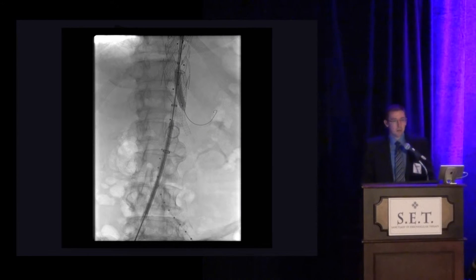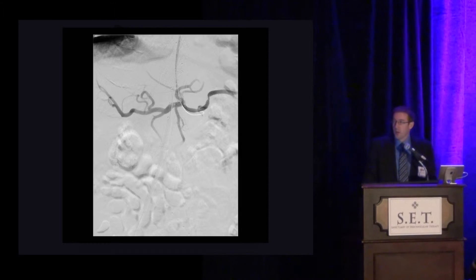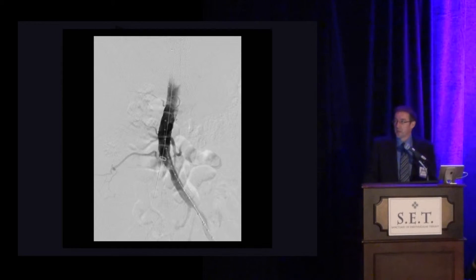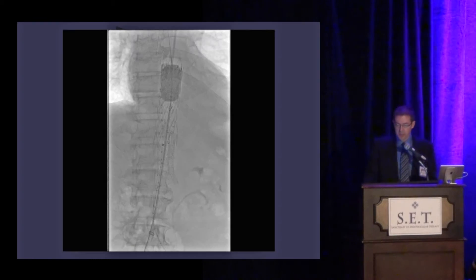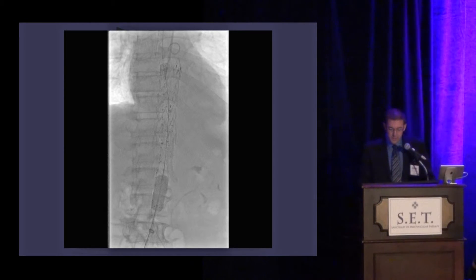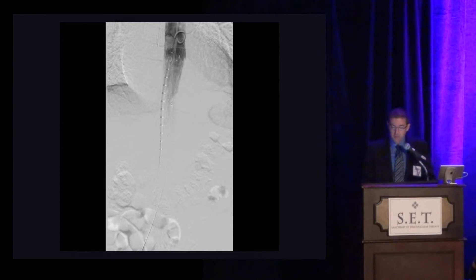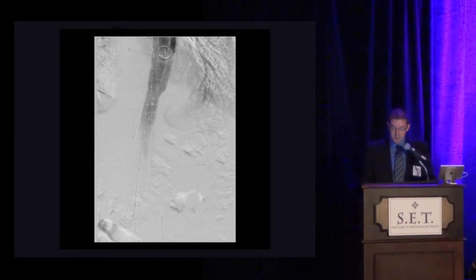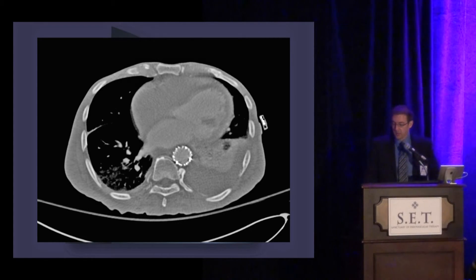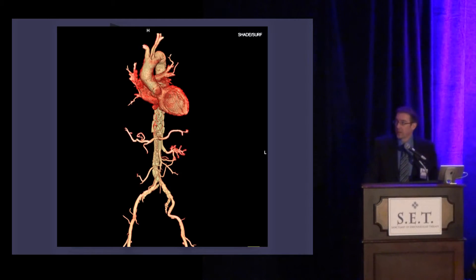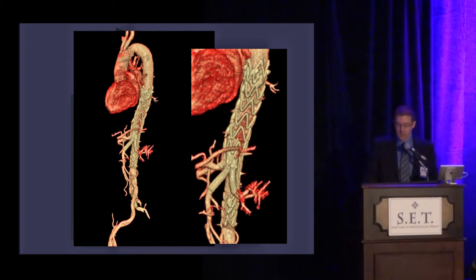Based on his anatomy, we were also able to preserve the IMA. We extended with the ipsilateral limb from the Endurant, then extended with a 20mm ipsilateral limb extension, landing just above the IMA in the infrarenal aorta, and then ballooned proximally and distally. This is our final run, preserving all three vessels. Post-op CT scan shows all three branches are wide open with good wall apposition of the graft, IMA still patent, and a 3D rendering shows the three branches as they exit the contralateral gate.